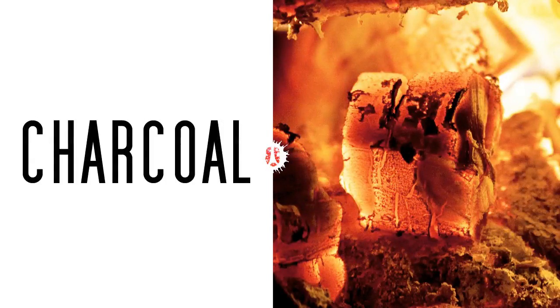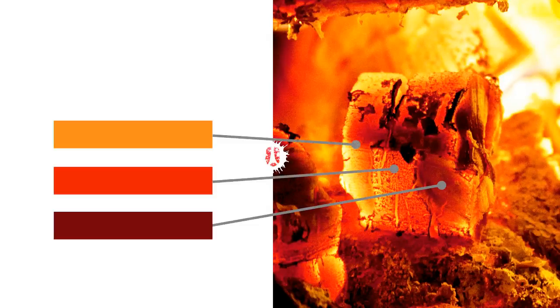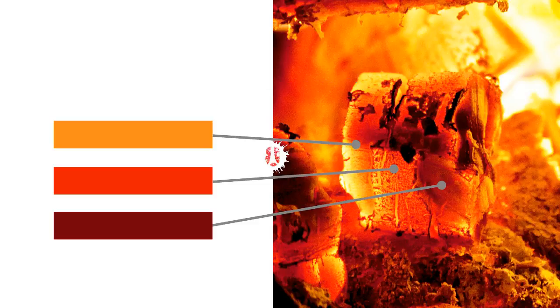When you warm up charcoal, it starts to glow. Colors can be all shades of red, orange and yellow. The hotter the charcoal, the clearer its color.